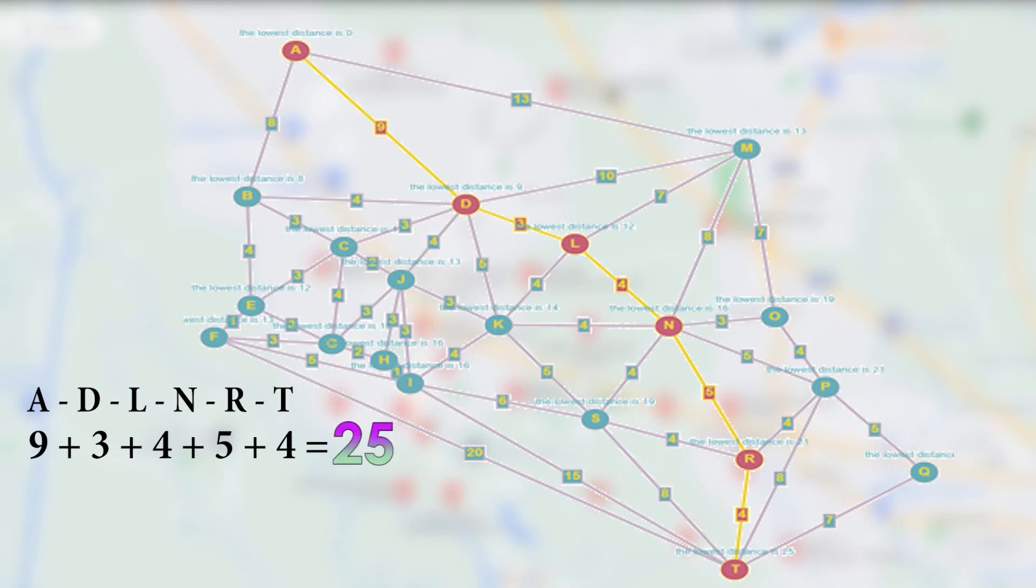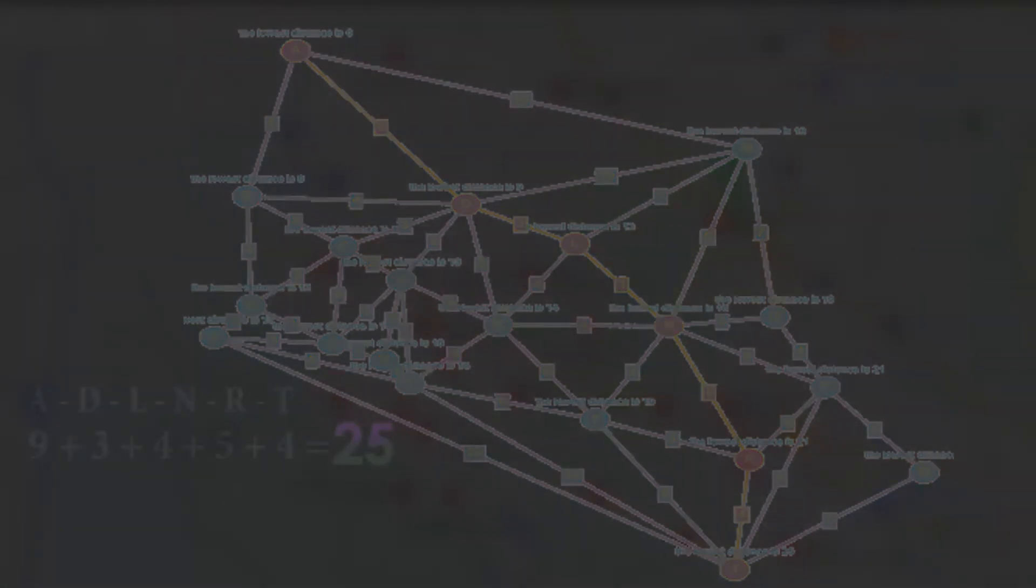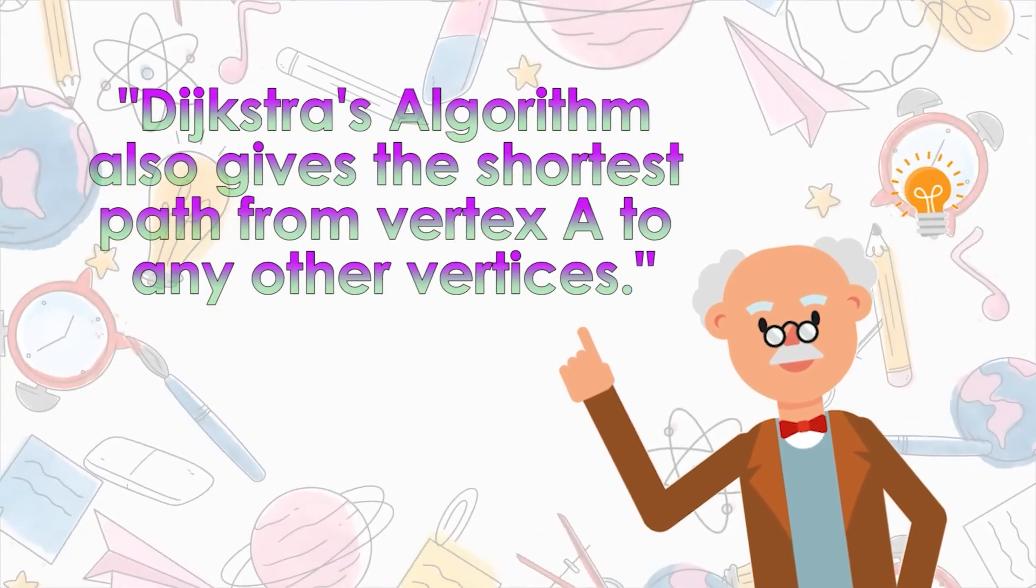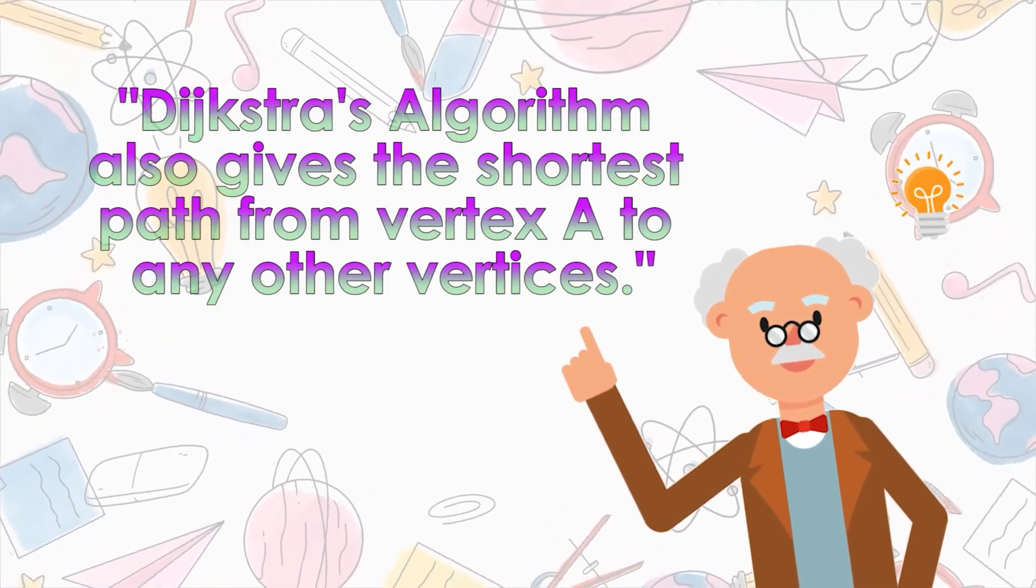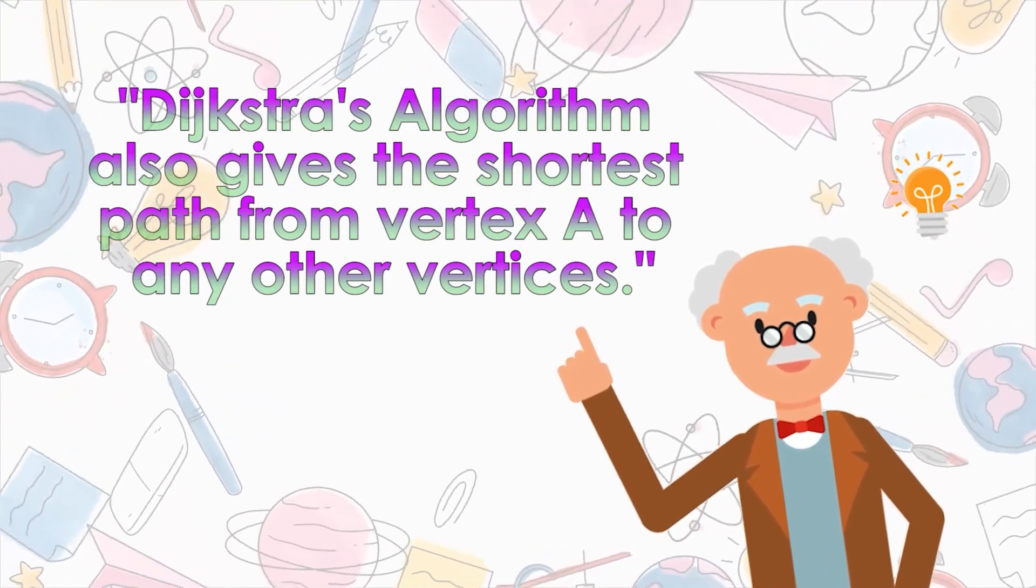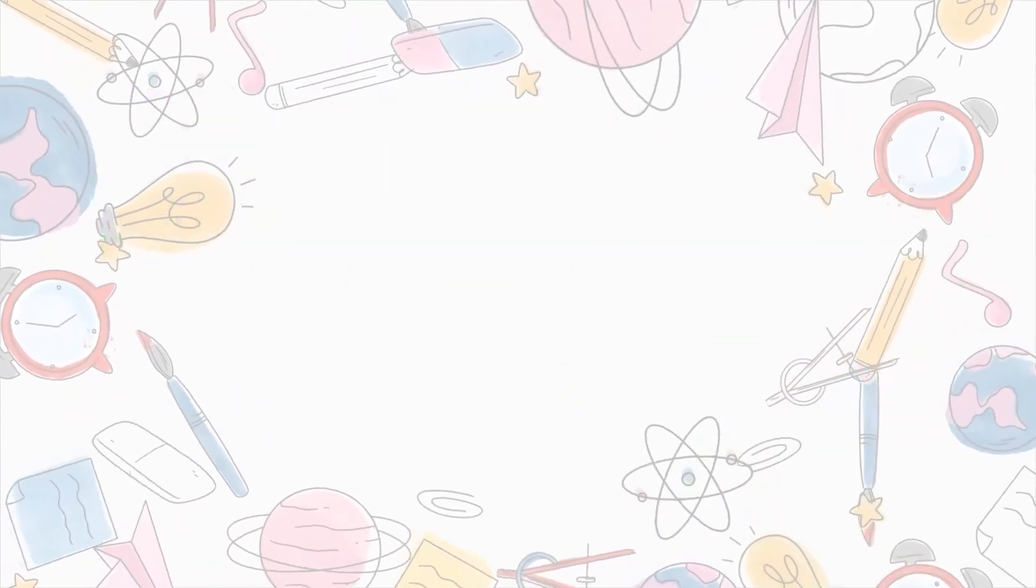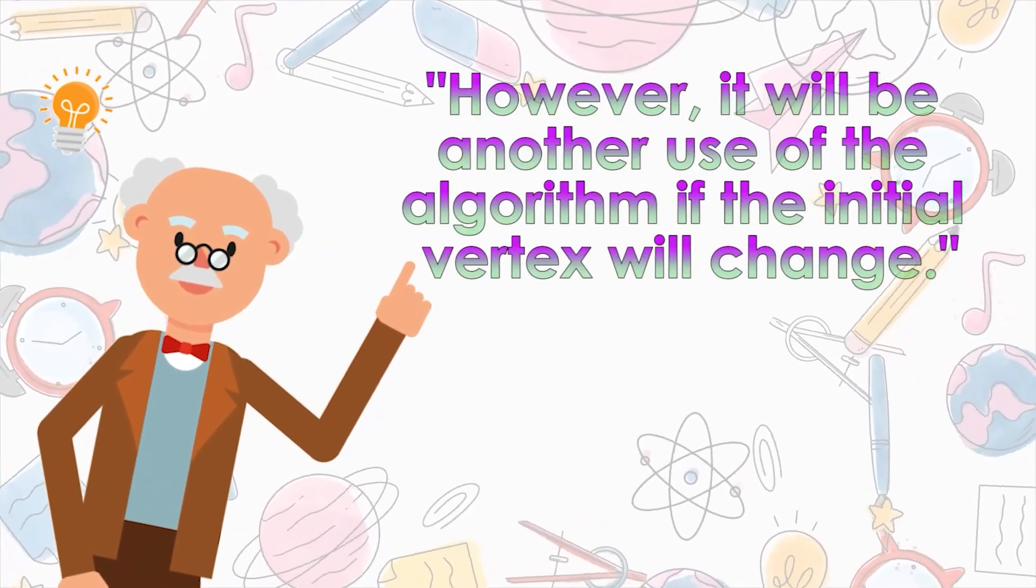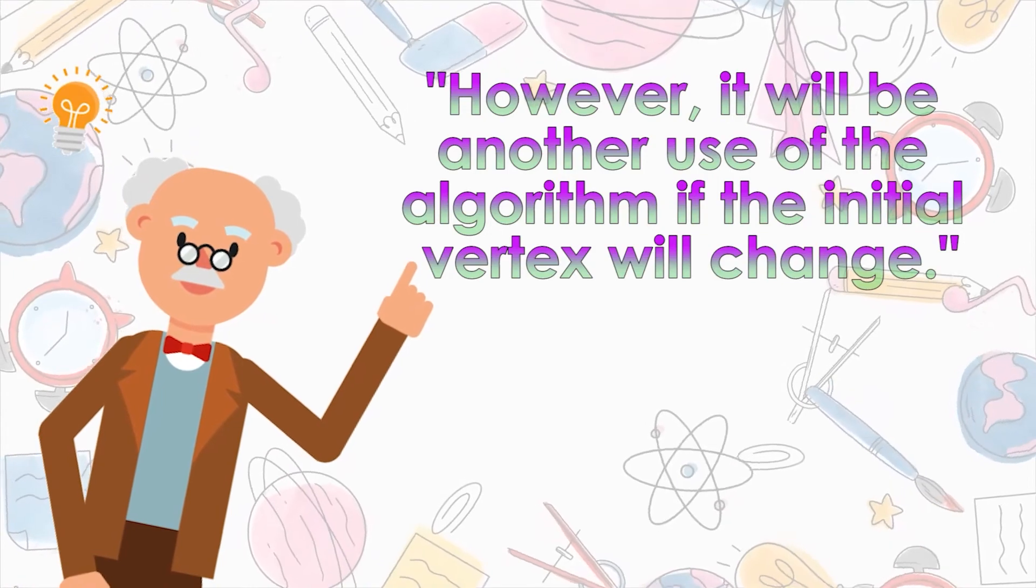By using Dijkstra's algorithm, the shortest path from Luok First Elementary School, which is vertex A, to Mambog Elementary School, which is vertex T, has been solved. A friendly reminder, the Dijkstra's algorithm also gives the shortest path from vertex A, which is Luok First Elementary School, to any of the other vertices. However, it will be another use of the algorithm if the initial vertex will change.